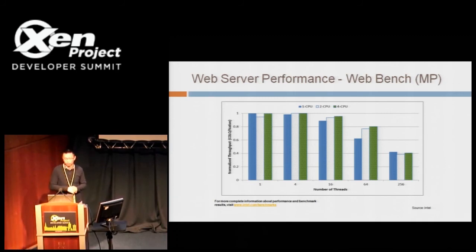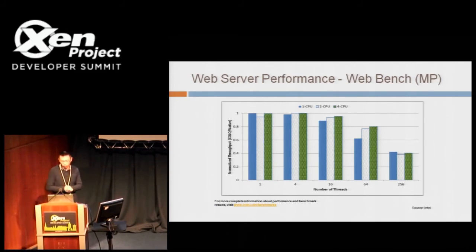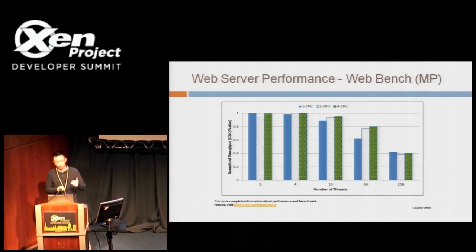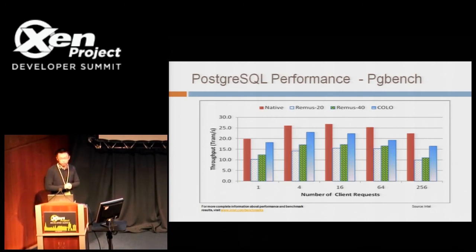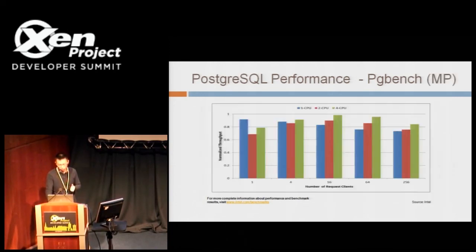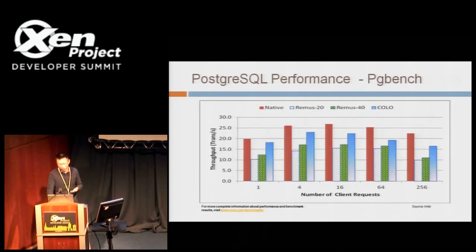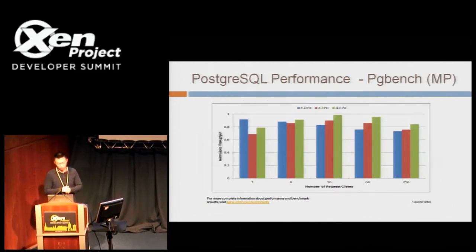Let's look at our scalability results. A key advantage of Colo compared to the lockstep solution is that it can support SMP, whereas the lockstep solution can only support UP. We ran the benchmark with guest vCPU counts of one, two, and four, and we can see that performance scales very well as the vCPU number increases. Next is the PG bench benchmark, which tests database transactions — it tells basically the same story: better throughput, lower latency, and very good scalability.